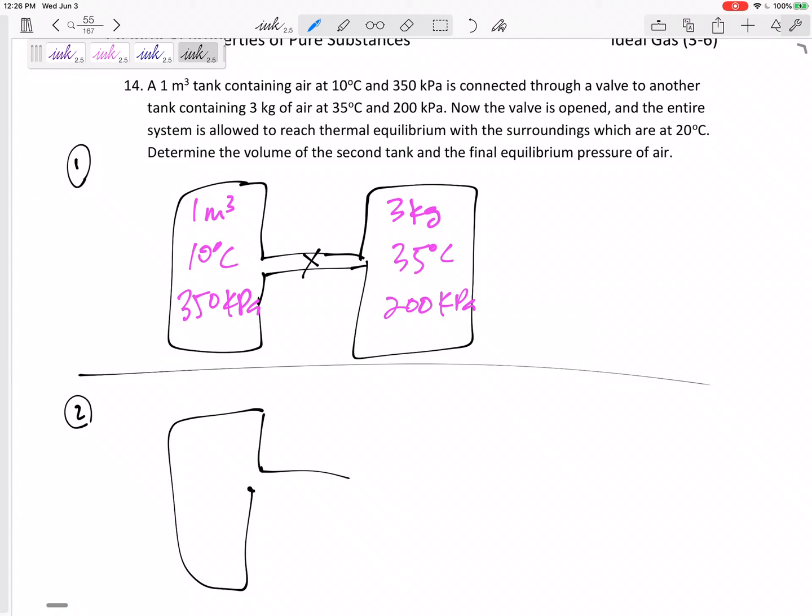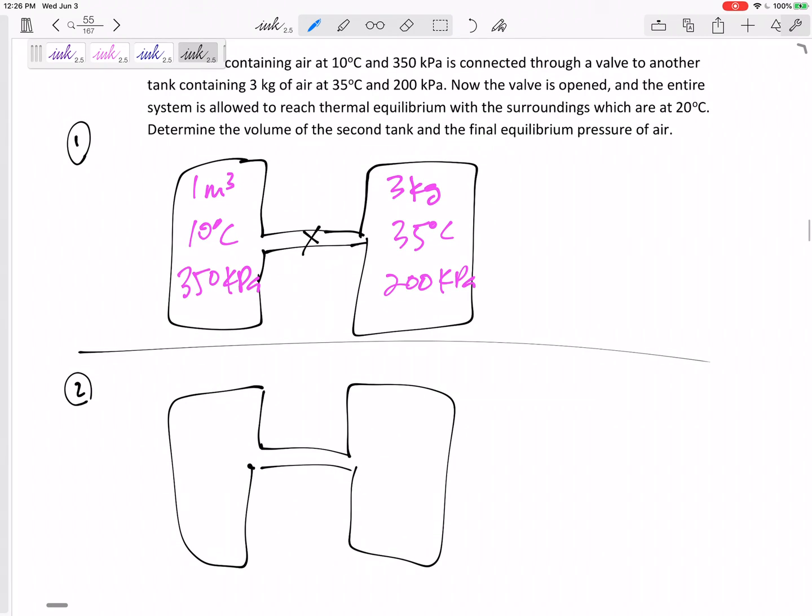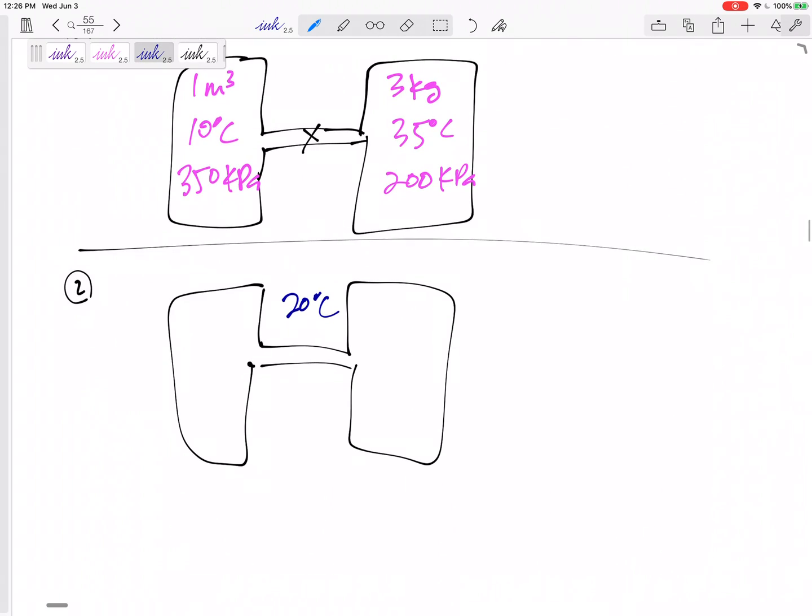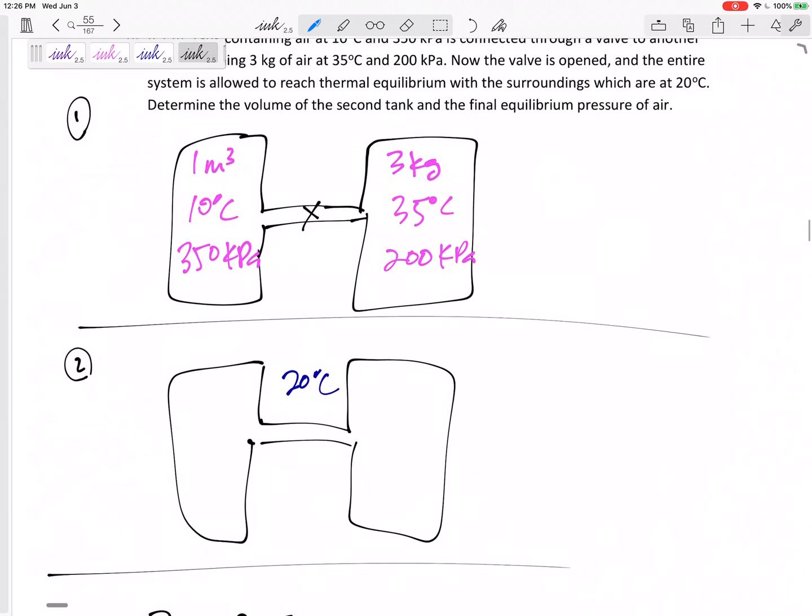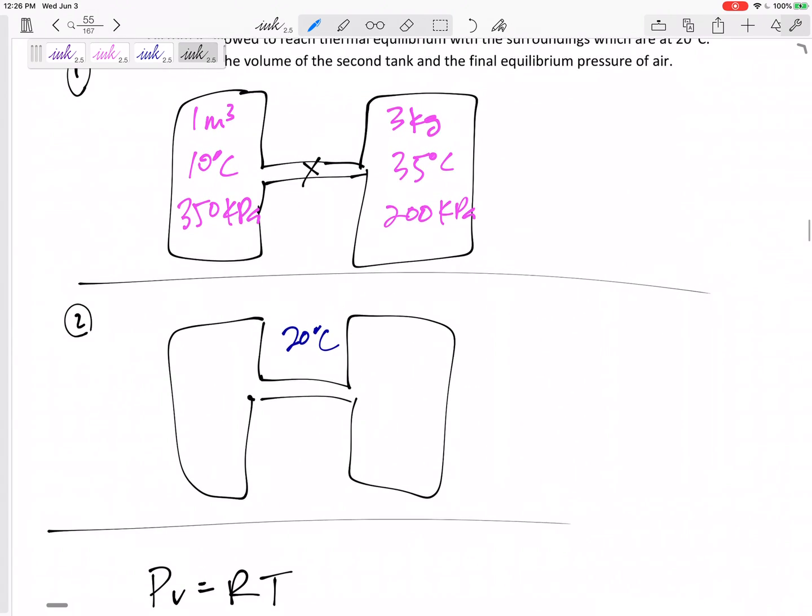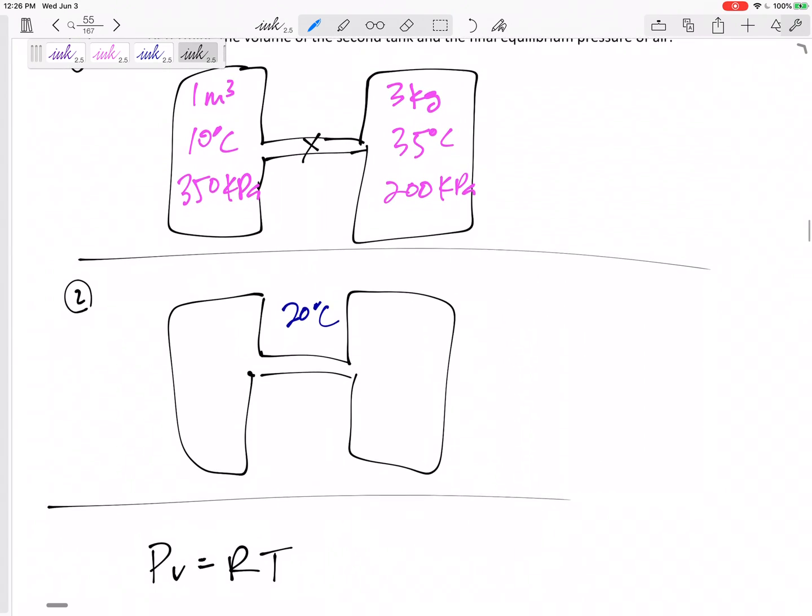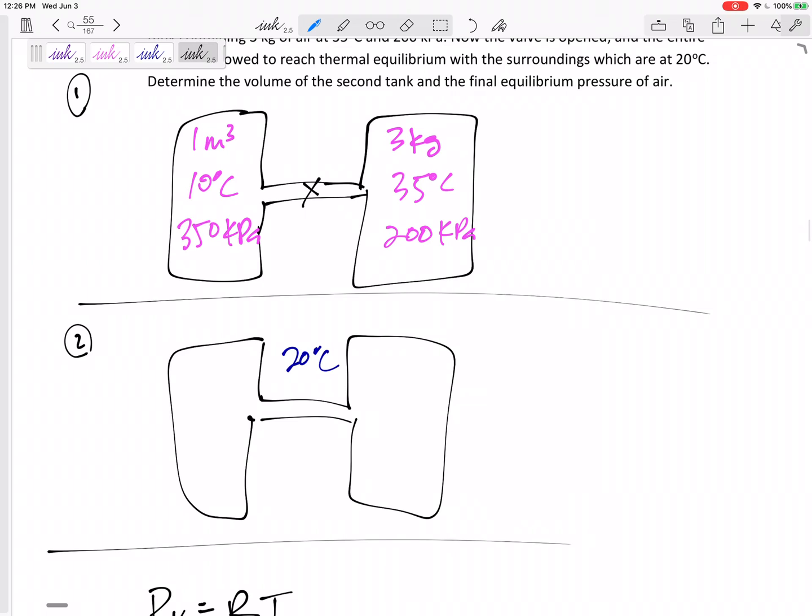Now the valve is opened and it's all one, it's all together. It's all the same pressure and it's all at 20°C. I could use something like PV=RT to find some information.